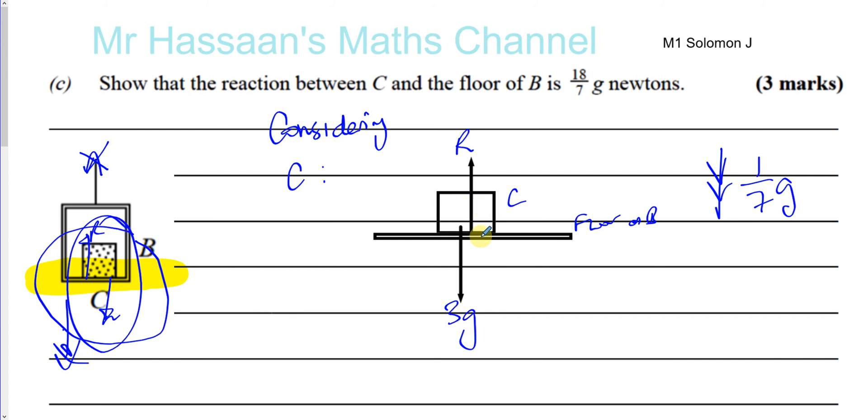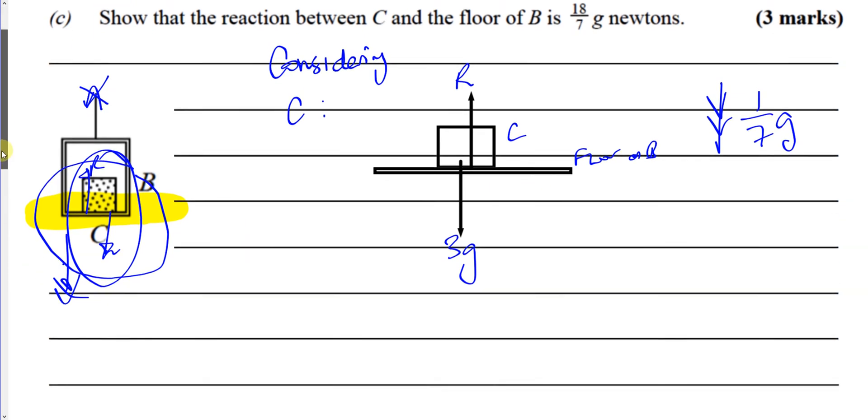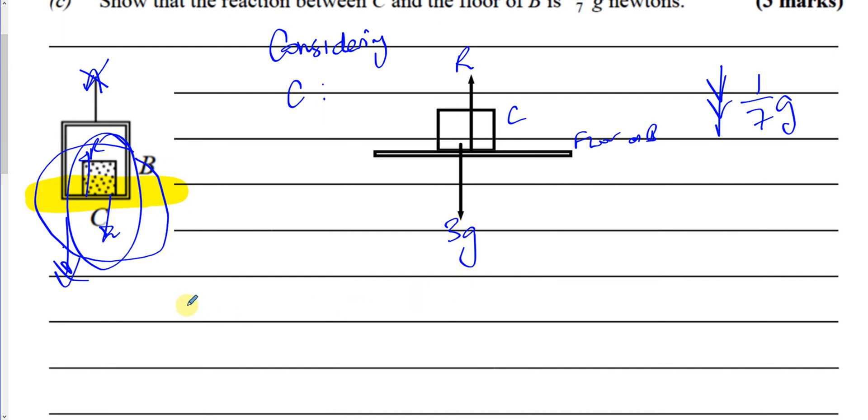So then I won't have the reaction force of C on B then, because I'm only considering what's happening to C, not what's happening to B. So that's why you have to be very clear on these kind of questions. So now, what we need to do is think about, we're going to consider C, and we're resolving taking down as positive as C is moving down.